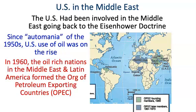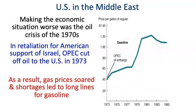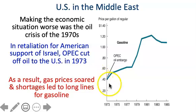OPEC attempted to control the supply of oil and raise the price of oil for the United States. Our oil situation became even worse in the 1970s, and we had two oil crises. The first one happened in 1973. In retaliation for our support of Israel, OPEC cut off oil supplies to the United States, and as a result, gas prices soared and shortages led to long lines for gasoline. Gas was about $0.40 a gallon in 1973, rising all the way up to $1.20 a gallon by 1980.